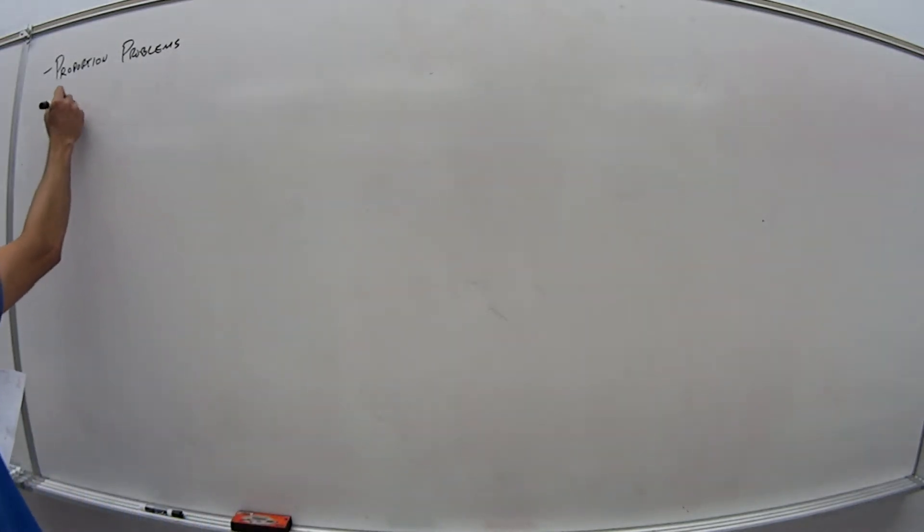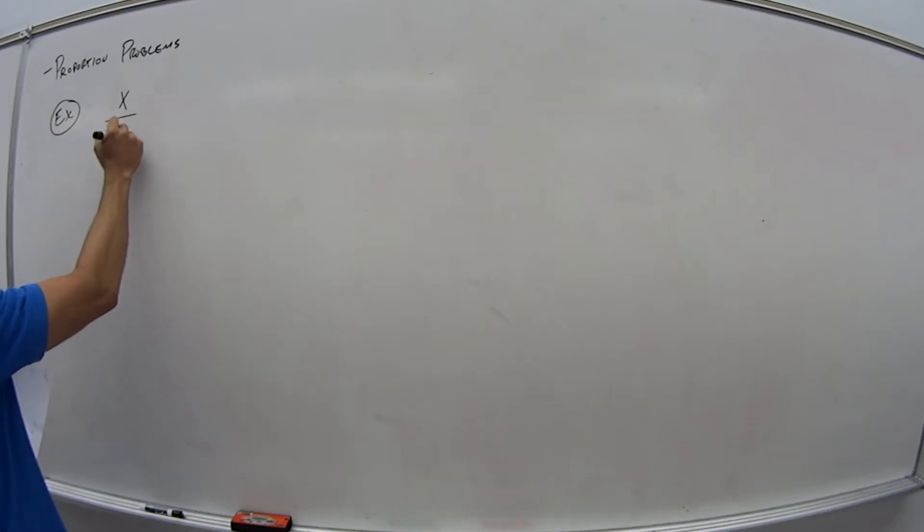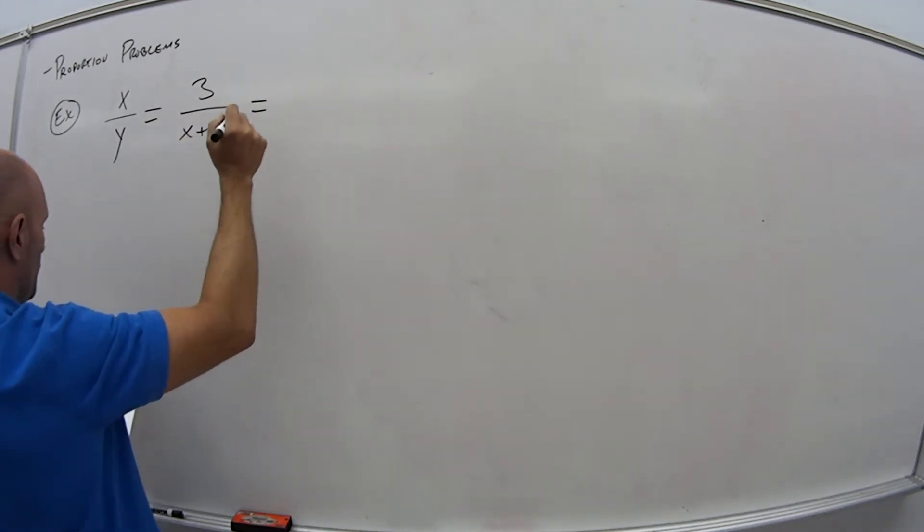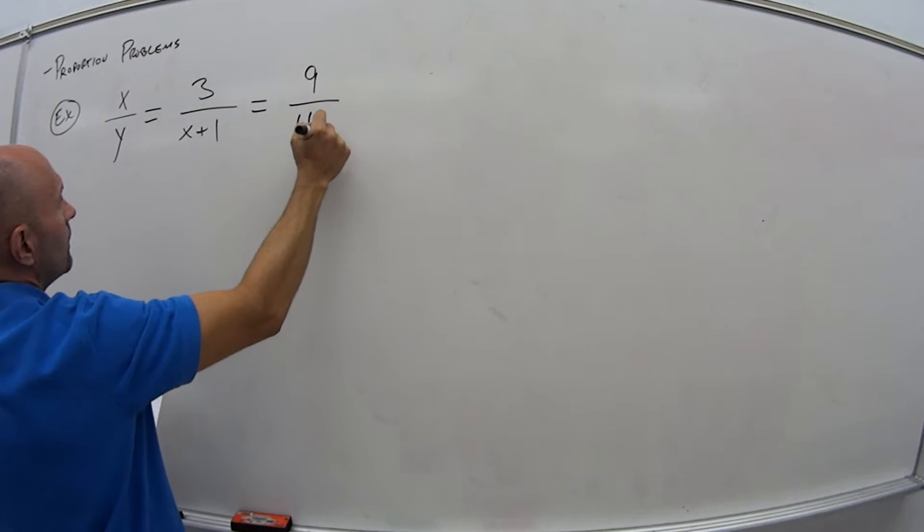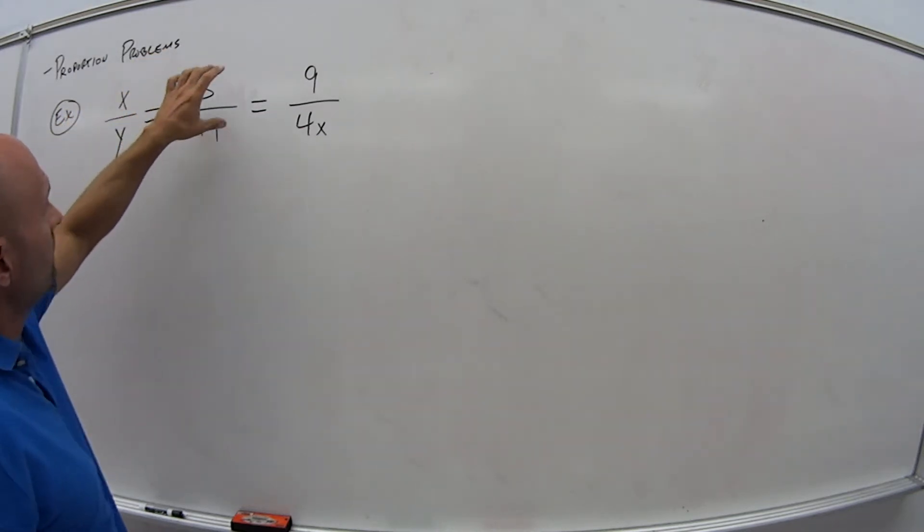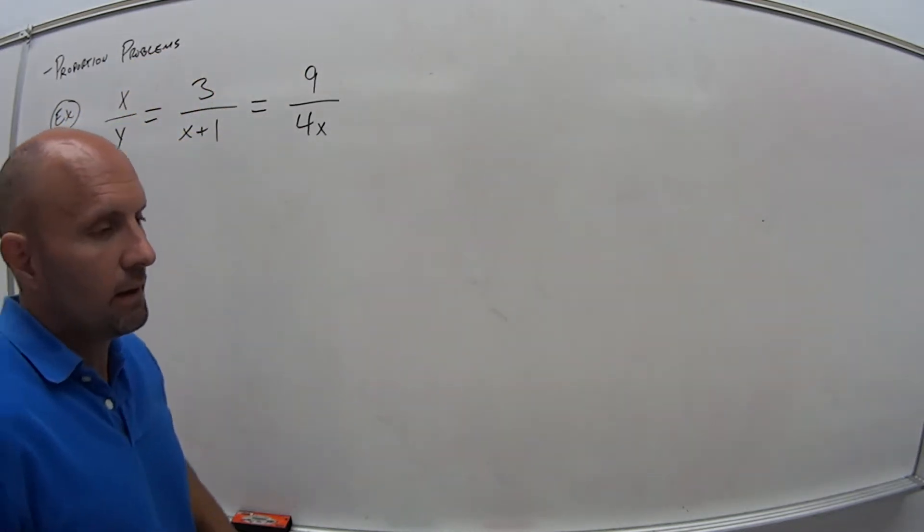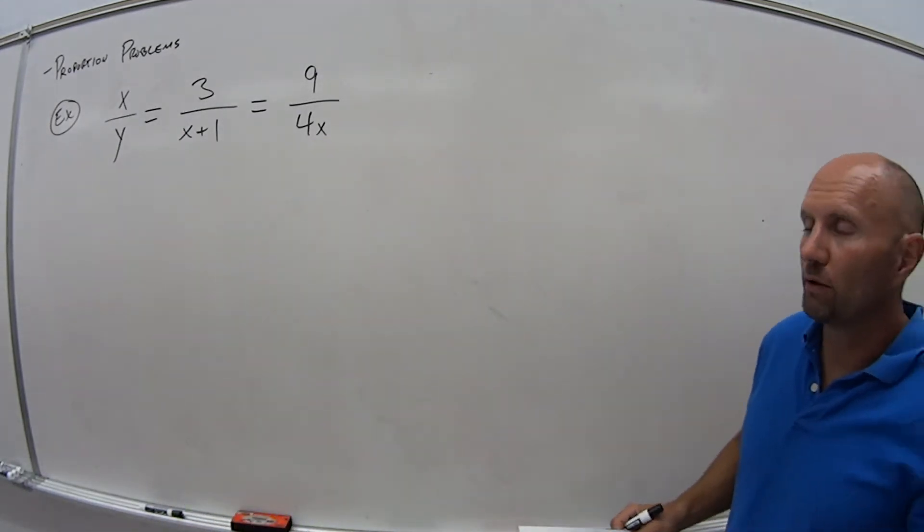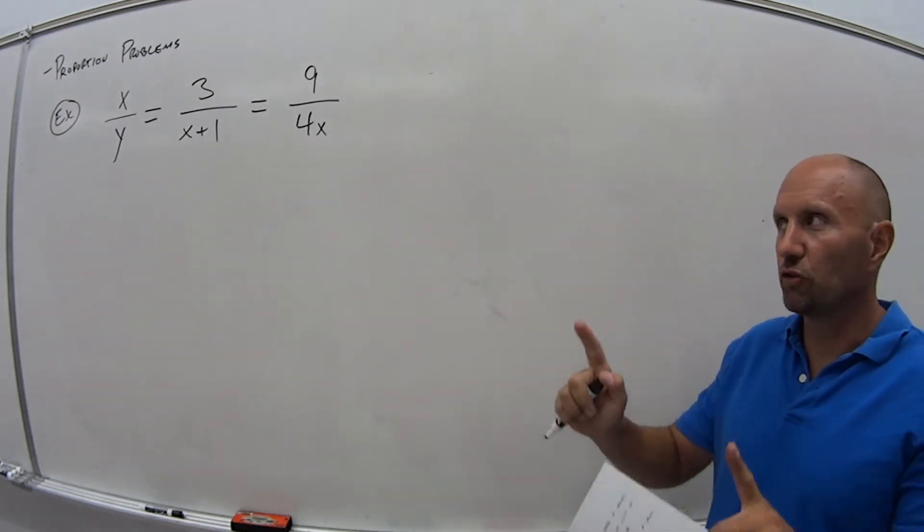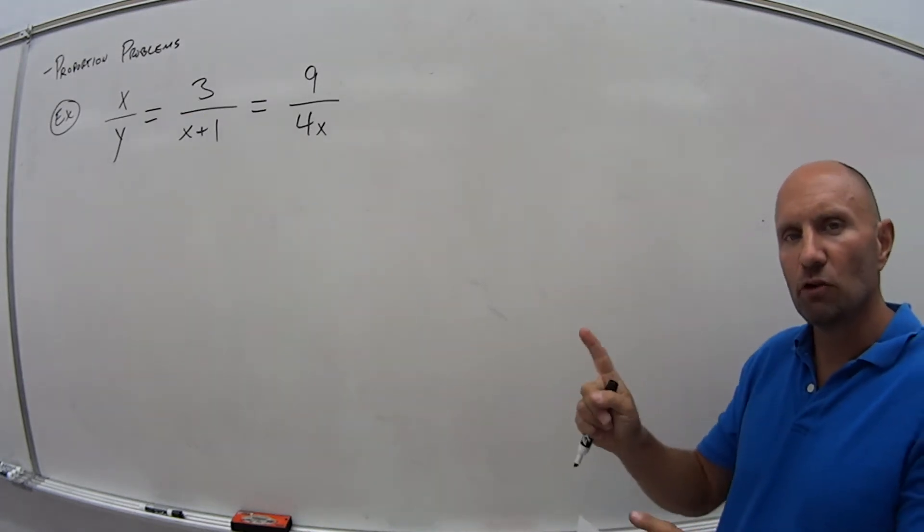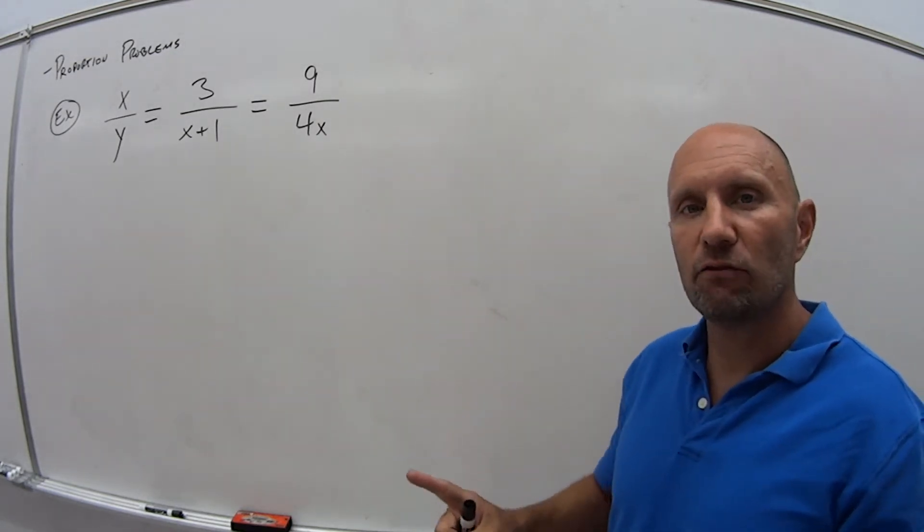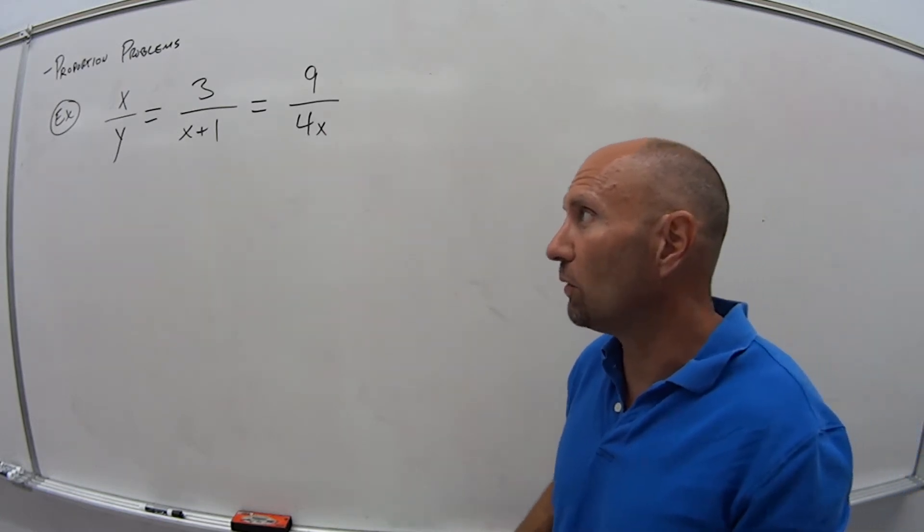So in this type of problem, it'll look like this. We'll have x over y equals 3 over x plus 1 equals 9 over 4x. So I'm given three pieces. This guy is equal to this guy which is equal to this guy. When I have these problems, and it could be written in any order because it's equals equals equals, but to solve these problems the first thing I'm going to do is just look at two of them. I don't care that there's three. I'm going to just look at two of them. But what I want to do is pick out the two pieces that have only one variable in the same variable.